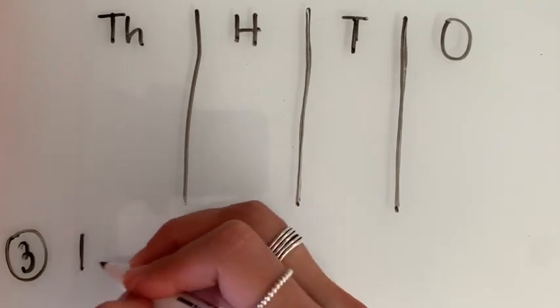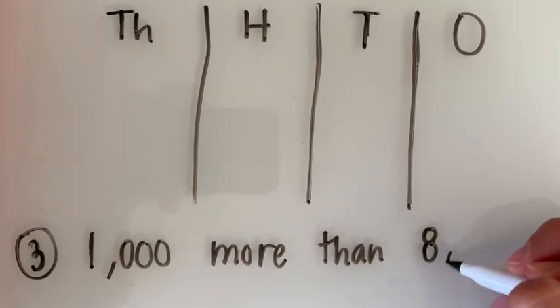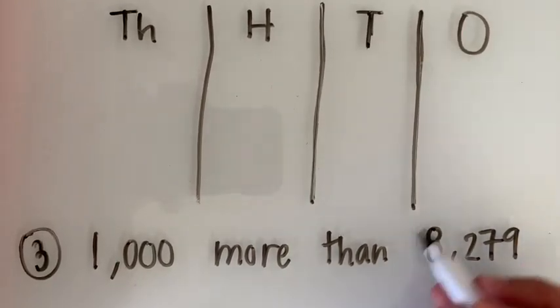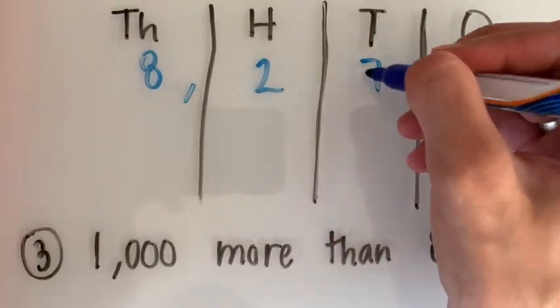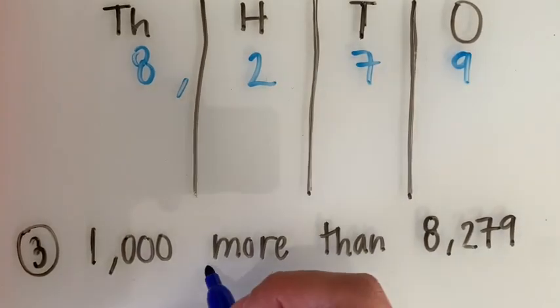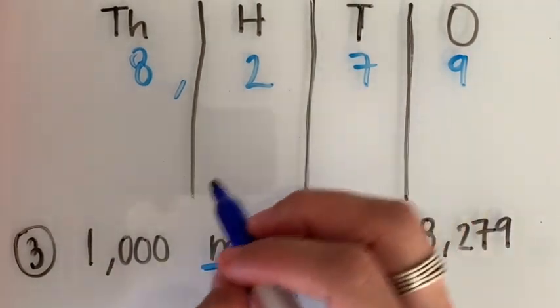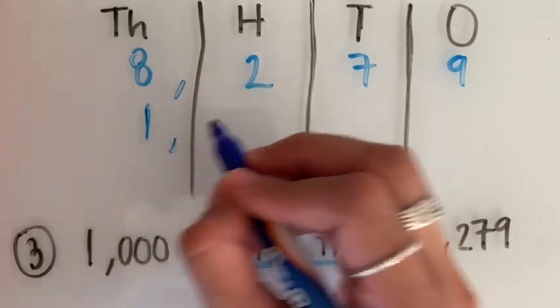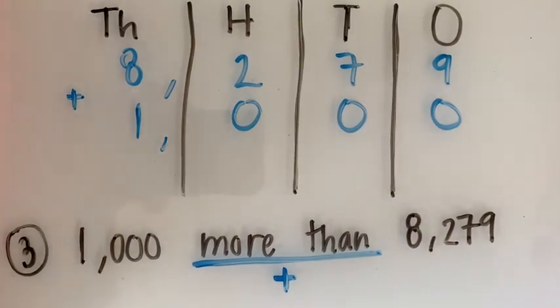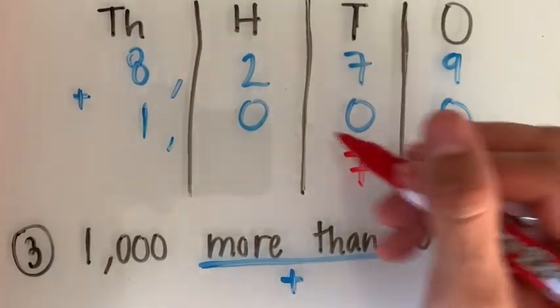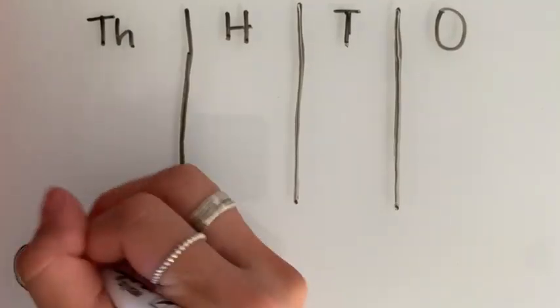Our third example asks us to find a thousand more than 8,279. We're going to start by adding 8,279 to our place value chart. Remember, more than stands for addition. We're going to find a thousand more than 8,279, so we're going to add 1,000 to our place value chart. We plotted the one on the thousands place and the rest are zeros. Then we're going to add each place getting an answer of 9,272.